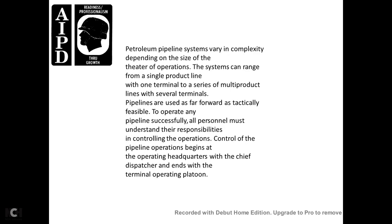Pipeline pump stations are installed along the main line to keep product moving at the desired flow rate. Petroleum pipeline systems vary in complexity depending on the size of the theater of operation. The system can range from a single product line with one terminal to a series of all-type product lines with several terminals. Pipelines are used as far forward as is tactically feasible.